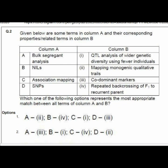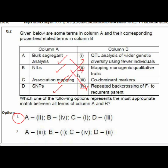Question 2 is a match-the-following on terms in Column A and corresponding properties in Column B. The terms are: bulk segregate analysis, Dutra NILS, associated mapping, and SNPs. The correct matching is: A with second, B with fourth, C with first, and D with third.